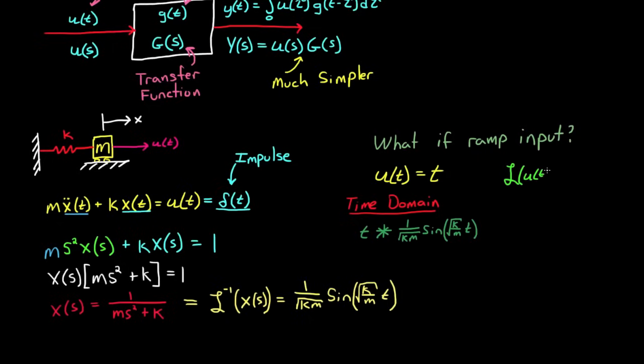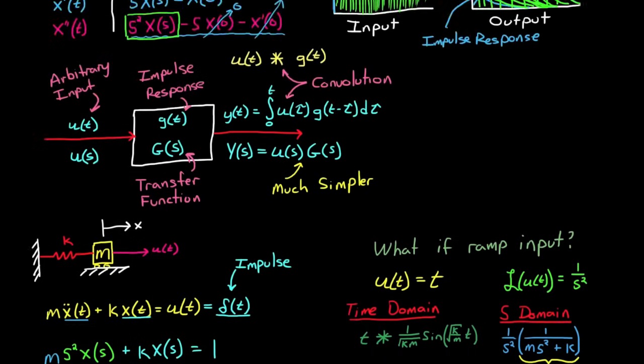Luckily, we can do this in the s domain by taking the Laplace transform of the ramp, which is 1 over s squared. Then to find the response to this ramp, all we have to do is multiply 1 over s squared by 1 over ms squared plus k. And remember also that 1 over ms squared plus k is the impulse response to the system in the s domain, so this is the transfer function. And notice that we got this transfer function by taking the Laplace transform of the equation of motion. We never needed to go to the time domain.